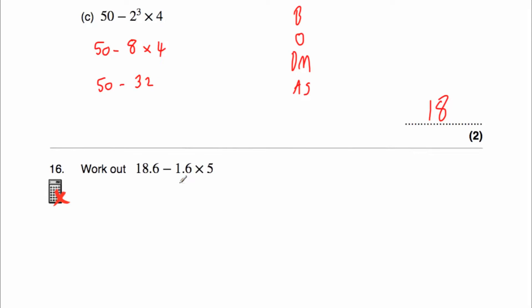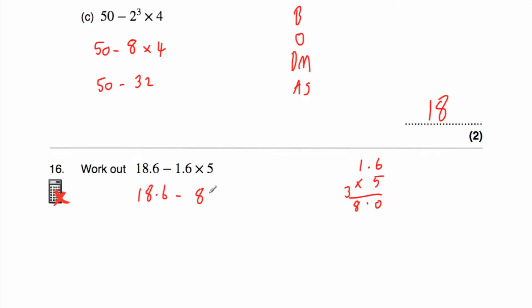Question 16: work out 18.6 take away 1.6 multiplied by 5. No brackets, no orders; we have a multiplication: 1.6 times 5 — 5 times 6 is 30 (put 0, carry 3), 5 times 1 is 5 plus 3 is 8 — so 8.0. Then 18.6 take away 8 is 10.6. Our answer is 10.6.